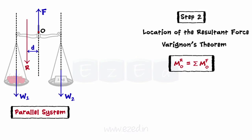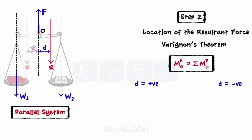In this case, we will assume it to be on the left from the reference point O. On applying Varignon's theorem and then simplifying, if a positive value of d is obtained, then the assumption made earlier is true. If a negative value of d is obtained, then the resultant lies on the opposite side, that is to the right of point O.